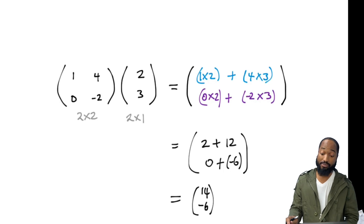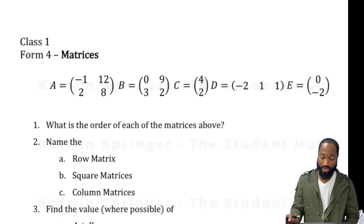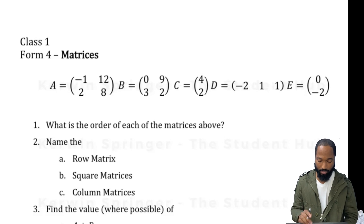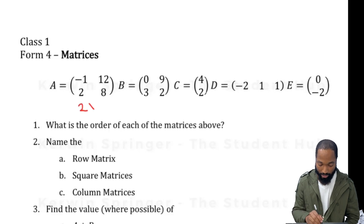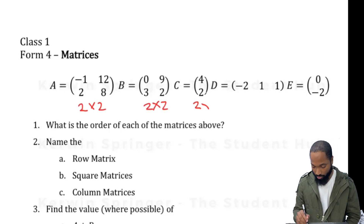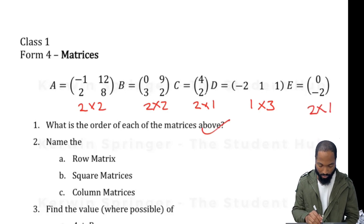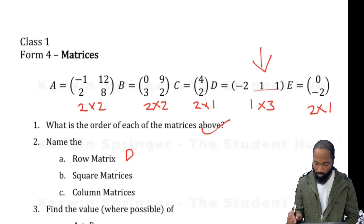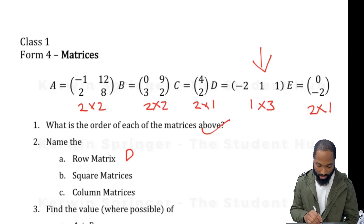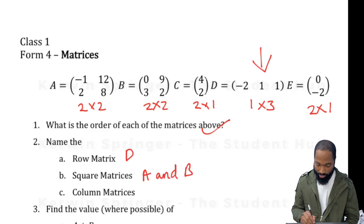So that's it for today's new content. Now let's cover the homework from last time. What is the order of each of the matrices? That means the size. This is a 2 by 2, this is another 2 by 2, this is a 2 by 1, and this is a 1 by 3. Name the row matrices — the row matrix is D, because it just has one row. Name the square matrices — that would be A and B.